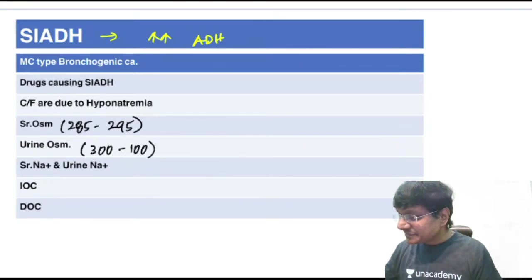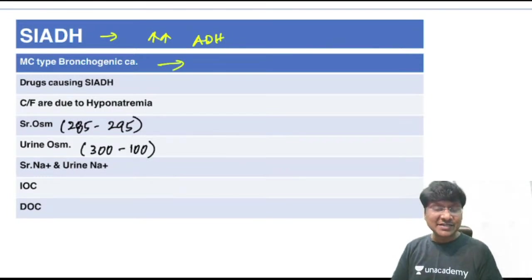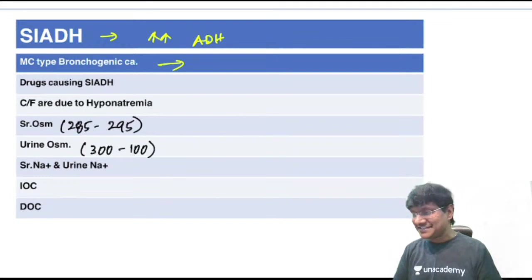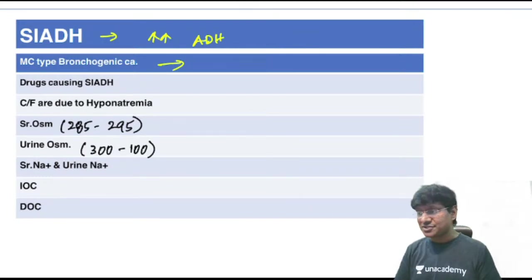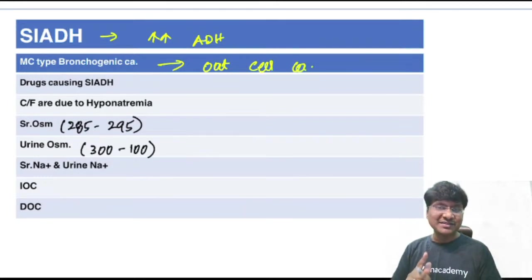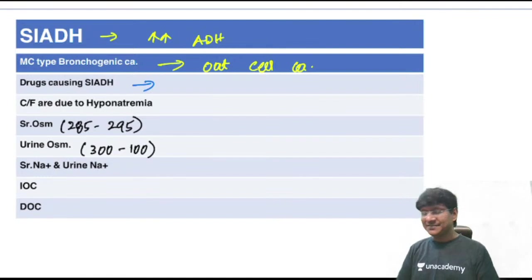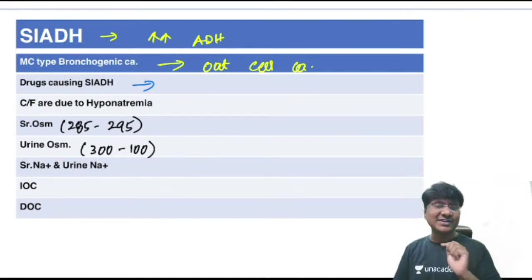The most common bronchogenic carcinoma responsible for SIADH is oat cell carcinoma, which is also called small cell carcinoma of the lung. Drugs causing SIADH include immunosuppressants.